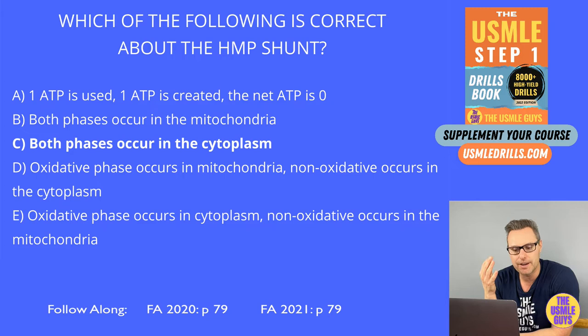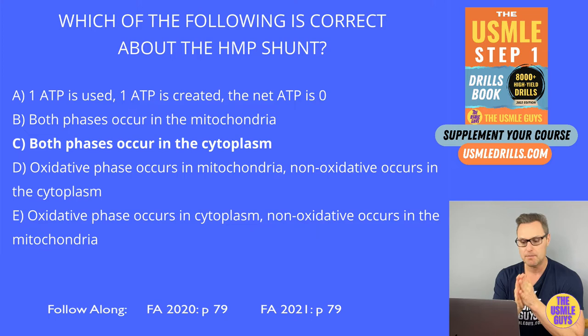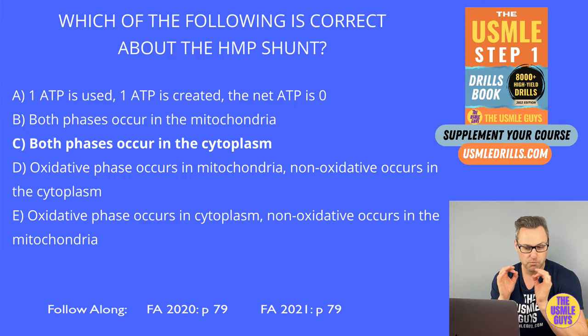Once we've got our NADPH, we look into the non-oxidative phase of the shunt, which is reversible. The ribulose-5-phosphate made in the oxidative phase can be converted into ribose-5-phosphate via the phosphopentose isomerase enzyme. This ribose-5-phosphate can then go on to nucleotide synthesis, or it can be converted via transketolase to either fructose-6-phosphate or glyceraldehyde-3-phosphate.